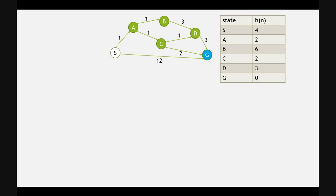Hello everyone. Today we will see an example of the A* algorithm. We have this graph where this is the initial state and this is the goal state. All the states and the heuristic values are given in the question.